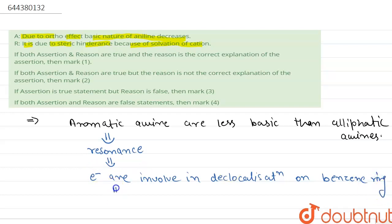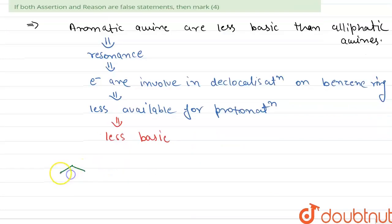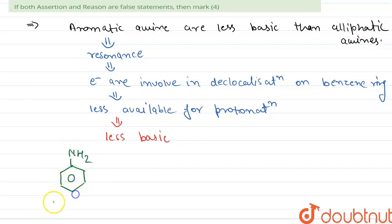The electrons are less available for protonation and hence aromatic amines are less basic. In aromatic amines such as aniline, electron-withdrawing groups decrease the basicity while electron-donating groups increase the basicity.